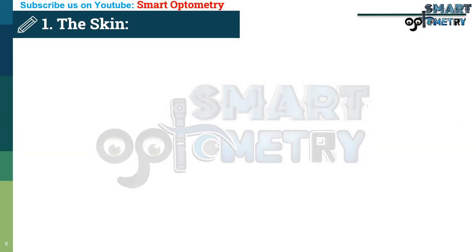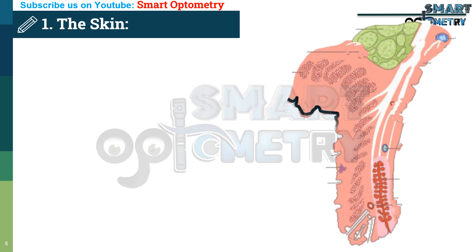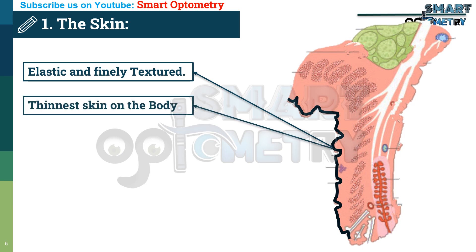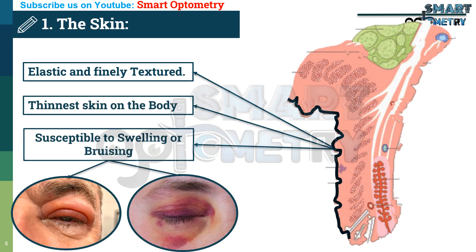Layer 1 – The Skin. First, we have the skin, which is incredibly elastic and finely textured. As mentioned earlier, it's the thinnest skin on the body. Its thinness makes it susceptible to swelling or bruising due to its loose attachment to the layers beneath.